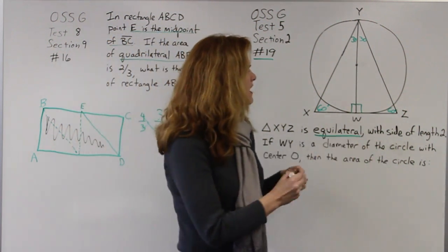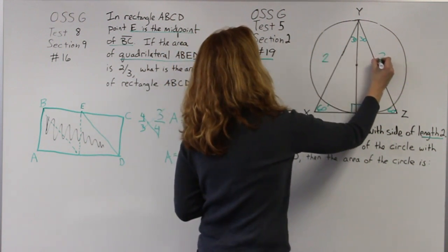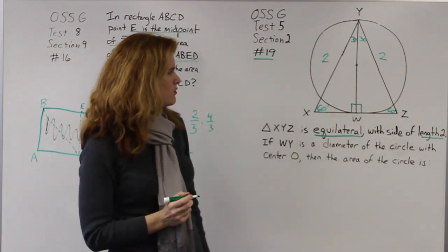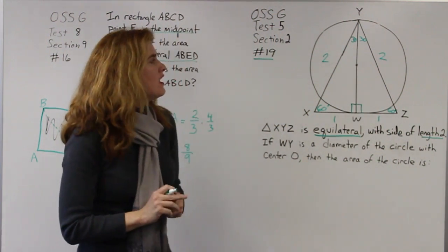They also tell me I have a side of length 2. So each side is 2. So the entire XZ would be 2, but it's broken in half, so each side is actually 1.